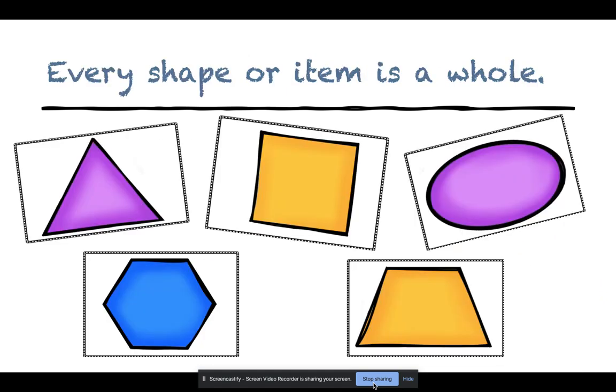Every shape or item is a whole. Here you have a triangle, a square, an oval, a hexagon, and a trapezoid. Whole means that they are not cut in any way, shape, or form.